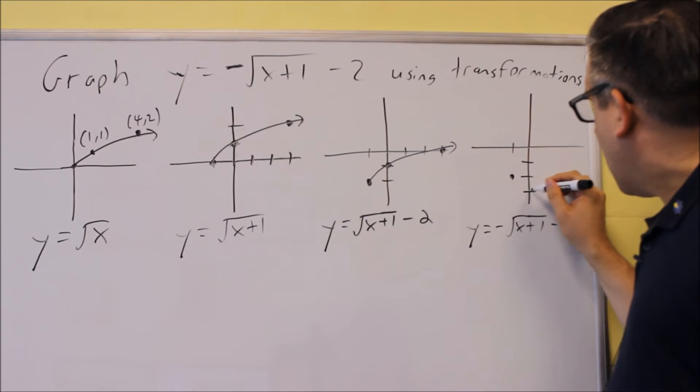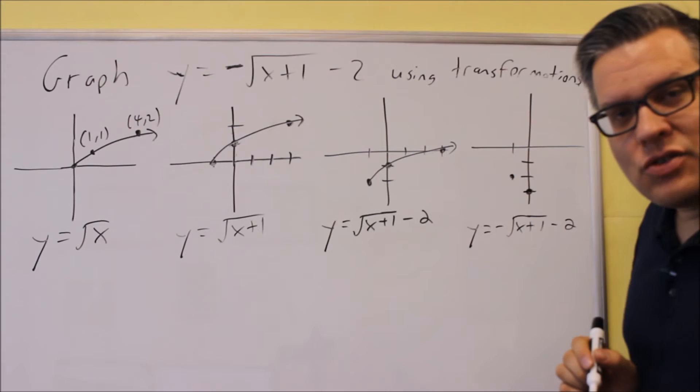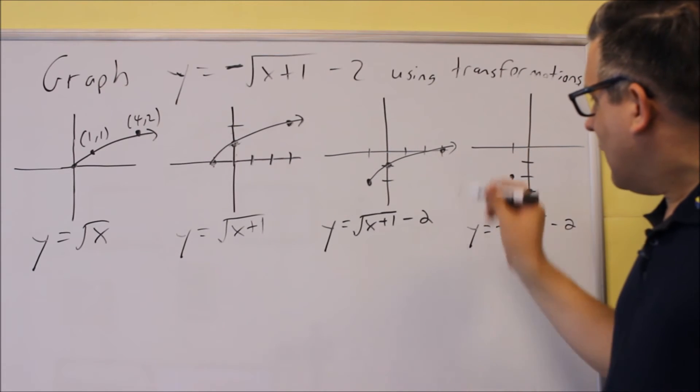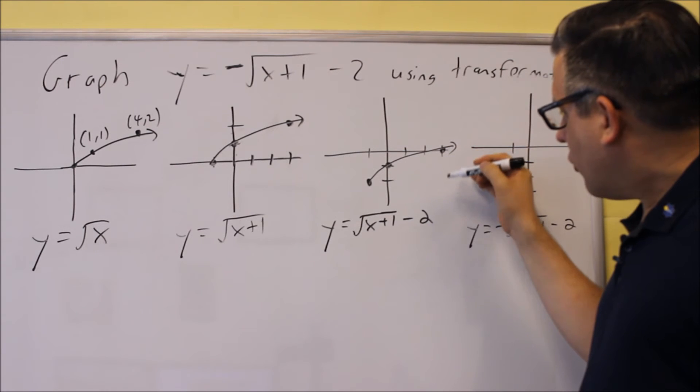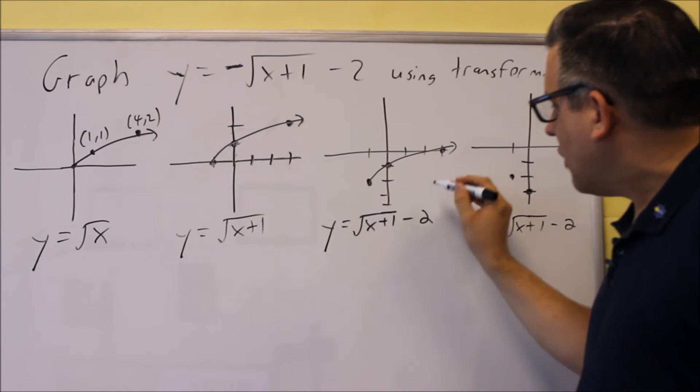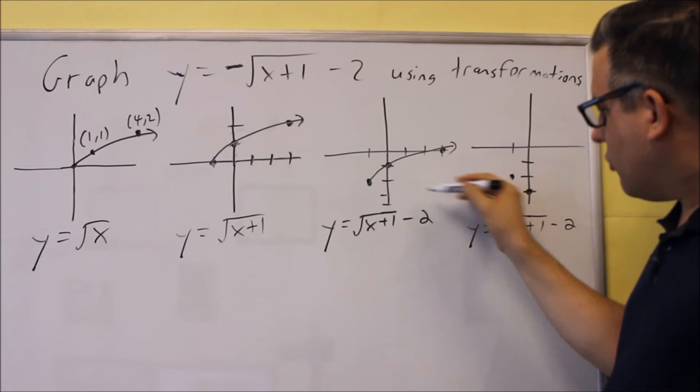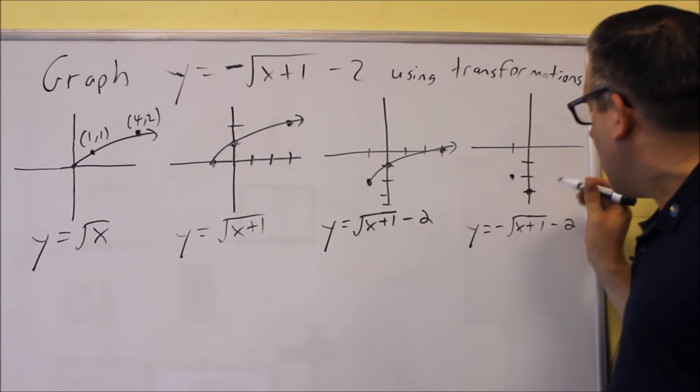Which means now the graph is going to go through this point. It's going to go through 0, negative 3. This point that was up here, that's going to shift and go down. So this means that instead of it going 2 up, it's now going to go 2 down because it got reflected down that way.